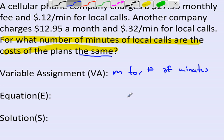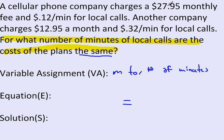And now we're going to start building our equation. So we go ahead and do our equal sign. Let's read through our problem. The cellular phone company charges $27.95 monthly fee and $.12/min for local calls. Another company charges $12.95 a month and $.32/min for local calls. We need to change that into an algebraic expression.